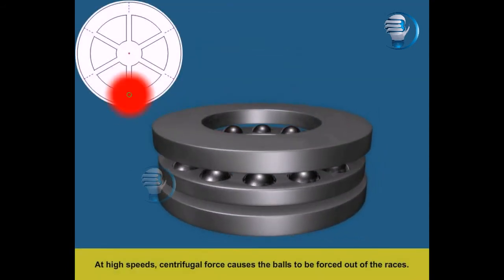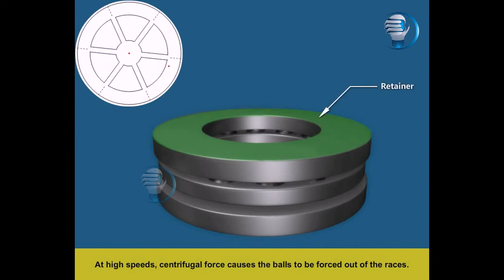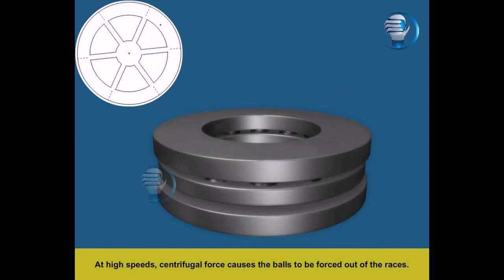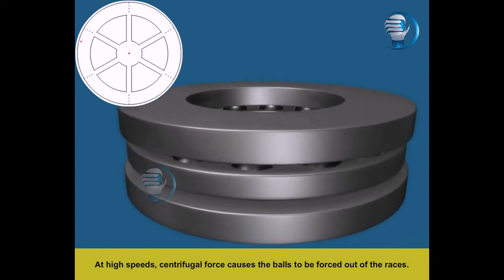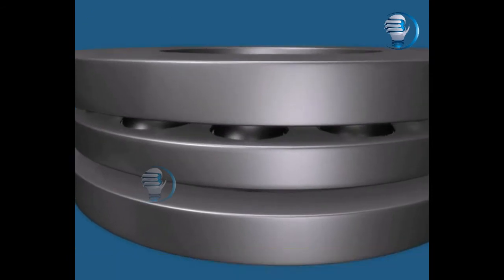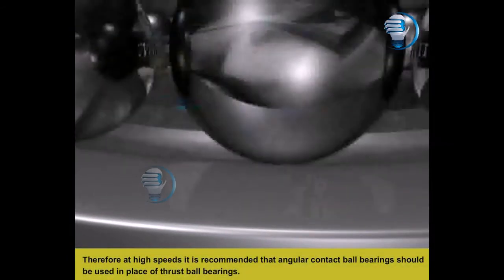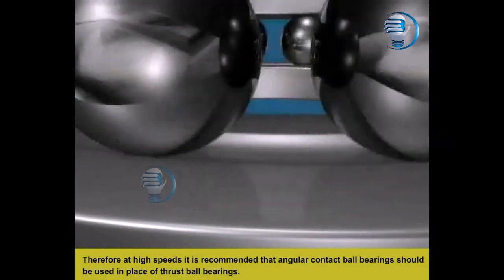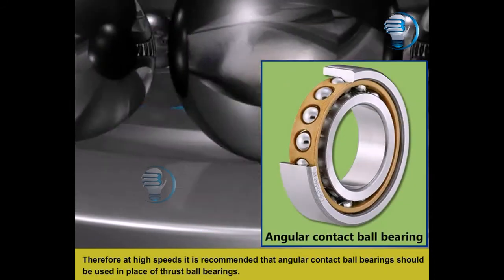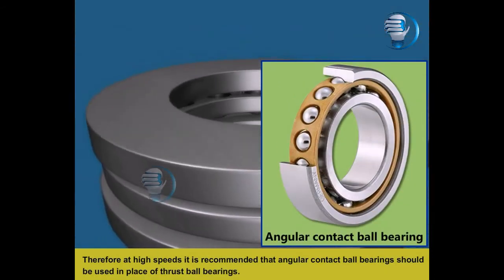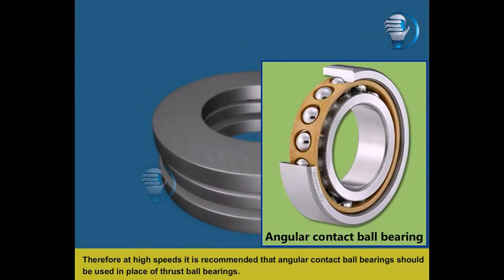At high speeds, centrifugal force causes the balls to be forced out of the races. Therefore, at high speeds, it is recommended that angular contact ball bearings should be used in place of thrust ball bearings.